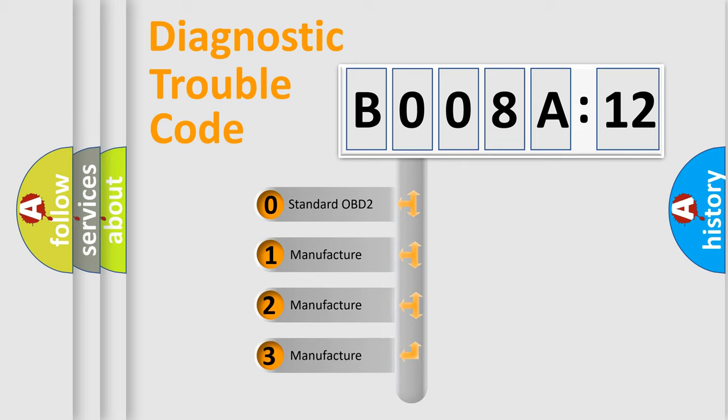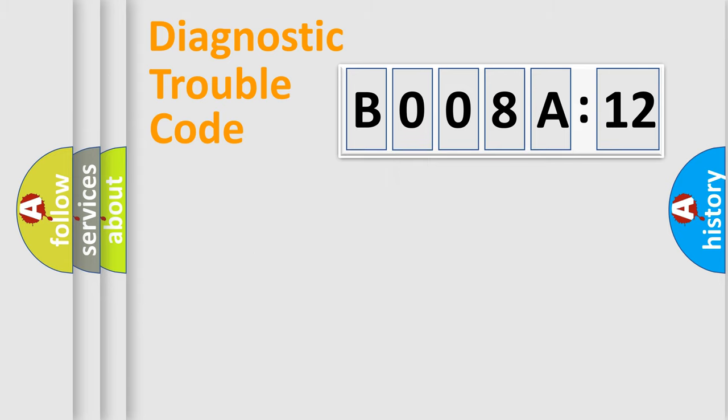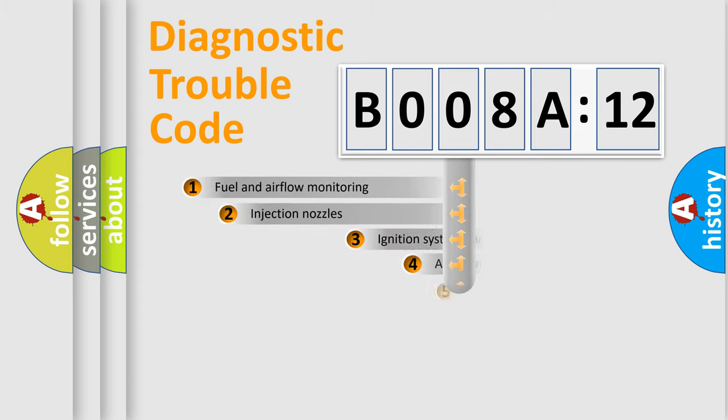If the second character is expressed as zero, it is a standardized error. In the case of numbers 1, 2, 3, it is a more prestigious expression of the car-specific error.